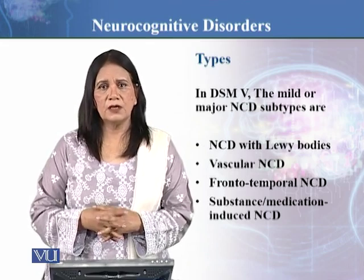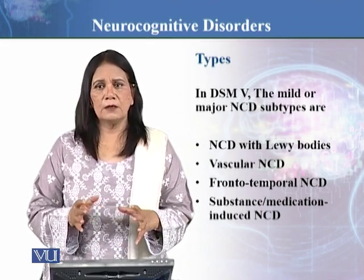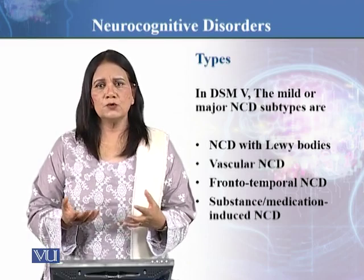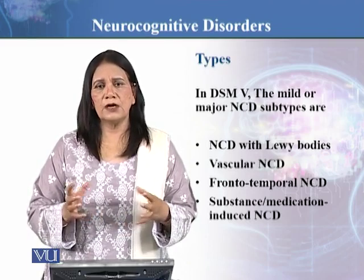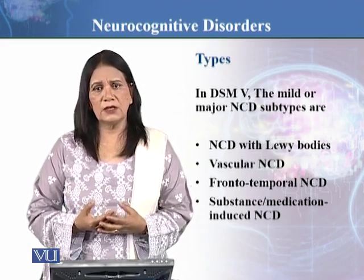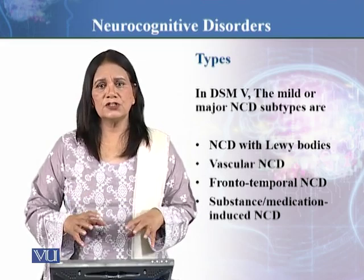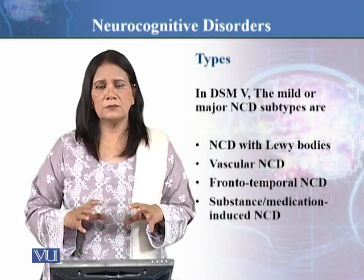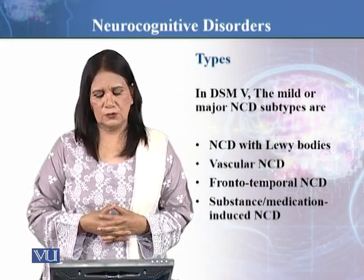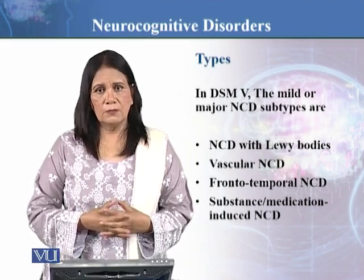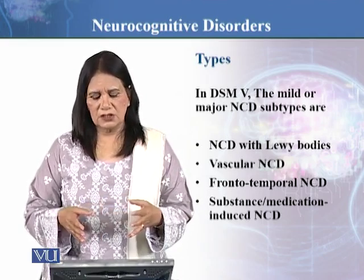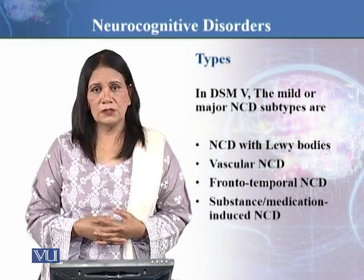Brain localization is very important — which particular area of the brain has been affected. Because if you look at the neurological basis of behavior, different brain areas have different functions. If there is a lesion, meaning damage or degeneration, there are irreversible damages to cognitive functioning. Here we are talking about a lesion or problem in the frontotemporal area, and this type is known as frontotemporal neurocognitive disorder.